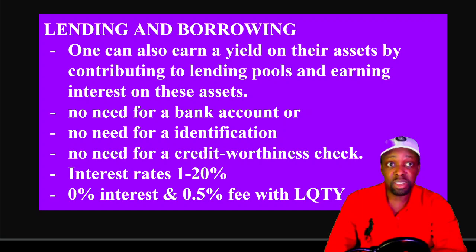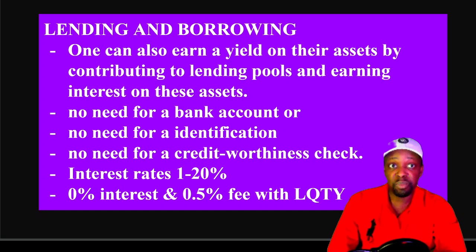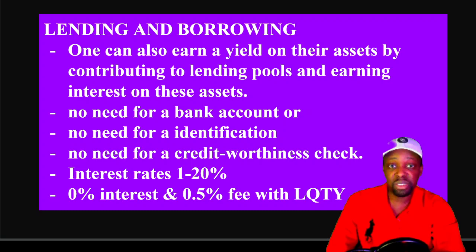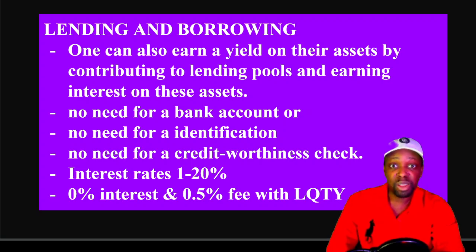You can also earn yield by contributing to the lending pool and earning interest — no bank account, no identification, no credit check required. Interest rates typically range from 5–8% but can go from 1–20% depending on collateral. For example, with Celsius at 30% loan-to-value you get a 1% interest loan. Loans are tax-free, so you don't have to sell your coins to spend money. Justin Sun, CEO of Tron, put in $1.8 million of Ethereum and took out an $899,000 loan at just 0.5% fee.